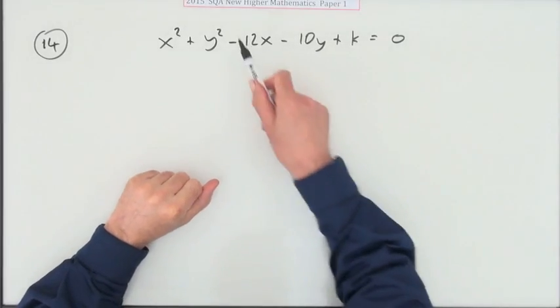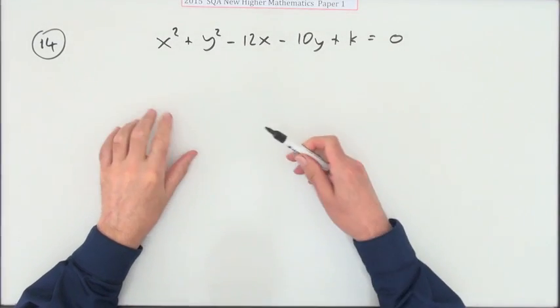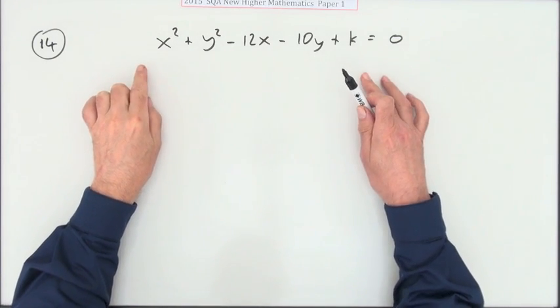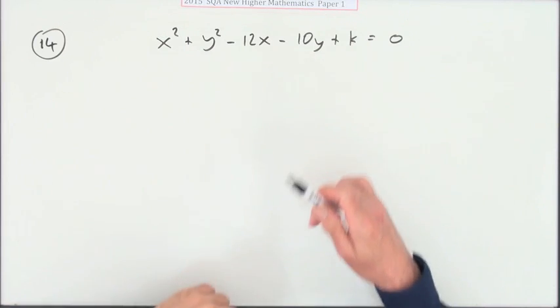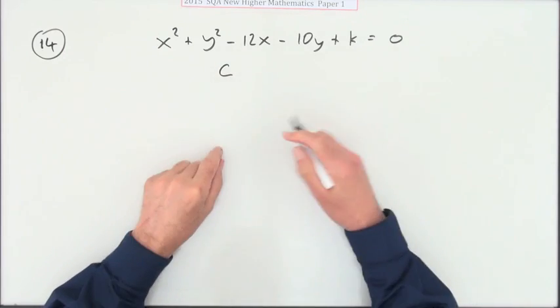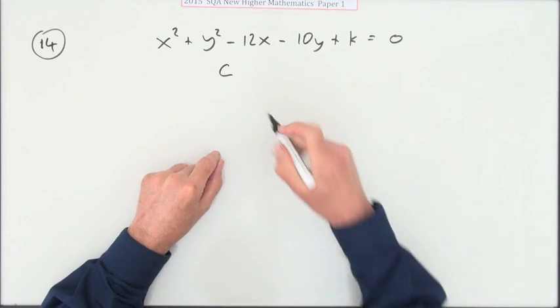Question 14 from the 2015 New Higher Paper 1. There's a circle here, but what it tells you about this circle is this circle cuts the coordinate axis at exactly 3 points. Now, how can that happen? Well, you have to carry out a geometrical investigation of it. Draw a picture.